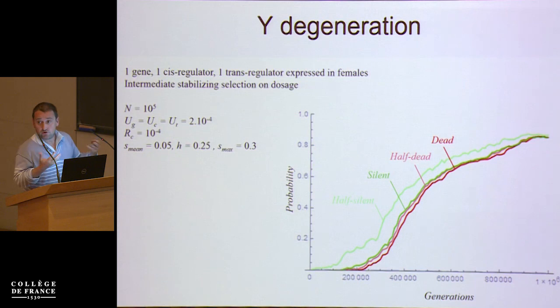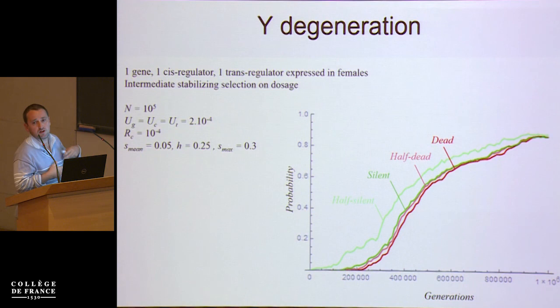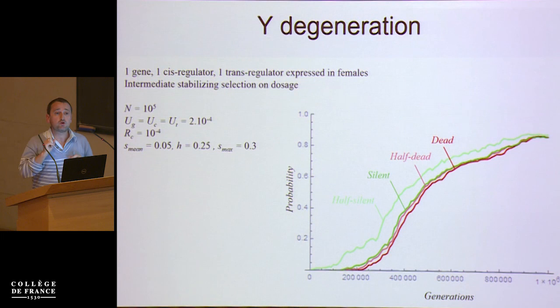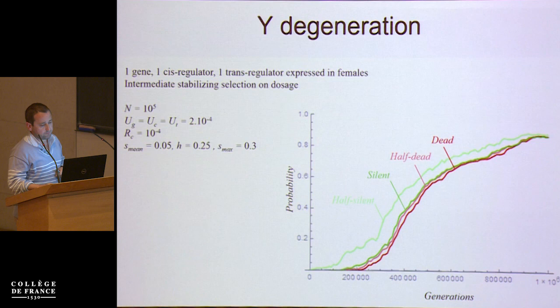What you see is degeneration of the Y, and that first the Y is silenced, then it's fully silenced, and when it's silent it accumulates a lot of deleterious mutations. So it goes kind of the other way around compared to the traditional view of the process. And it's only occurring for a single locus, so there is very limited selective interference at play here.